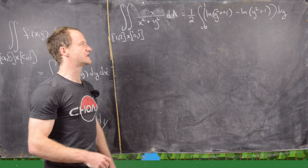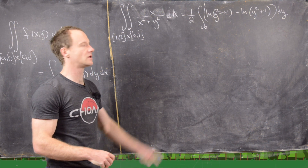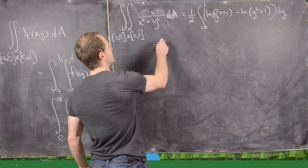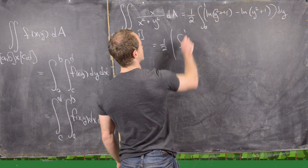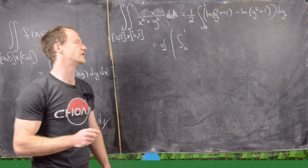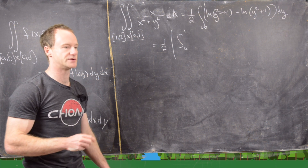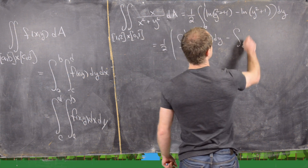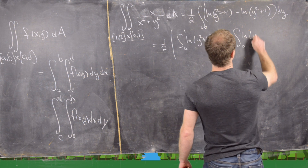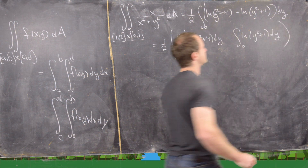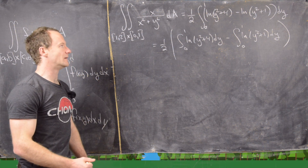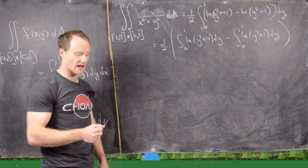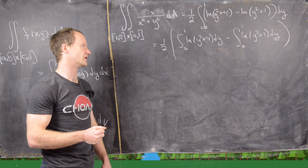We argued that this double integral reduces to one-half the integral from 0 to 1 of those two natural log terms. We'll split it into two integrals, since taking the antiderivative of natural log type terms usually requires integration by parts. So this is the integral from 0 to 1 of ln(y² + 4) dy minus the integral from 0 to 1 of ln(y² + 1) dy. Using log rules to combine them isn't really worth it since we still need integration by parts.